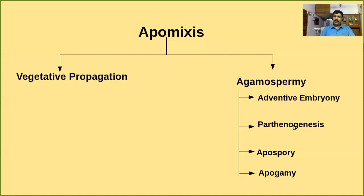Parthenogenesis means the formation of embryo from an unfertilized egg — it may develop from the egg but the egg is not fertilized. Apospory means the formation of gametophyte — that is, the embryo sac — directly from the sporophyte without meiosis. The embryo sac is formed directly from a diploid cell of the sporophyte, maybe the nucellus or integuments, without meiosis.